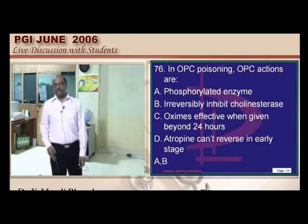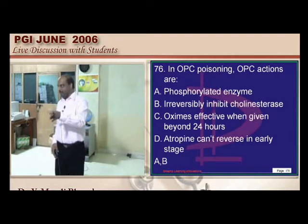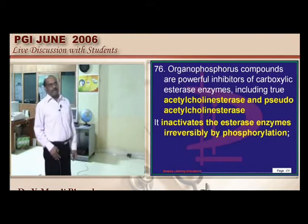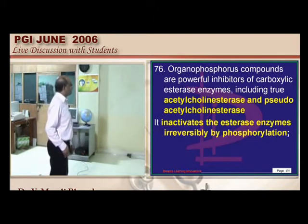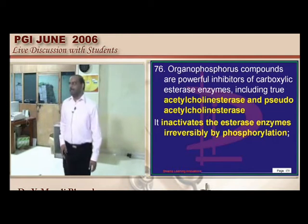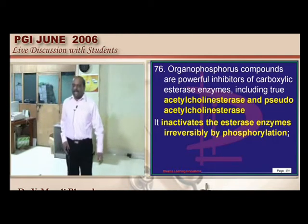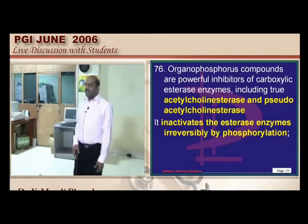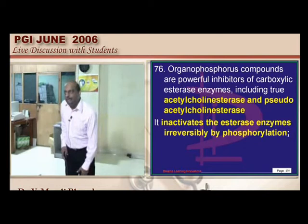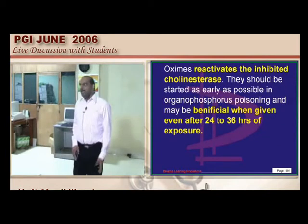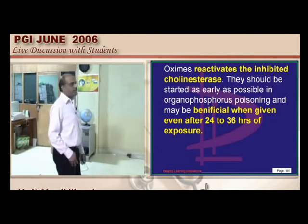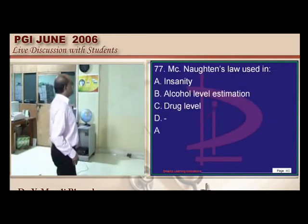Organophosphate poisoning causes irreversible phosphorylation and denaturation of acetylcholinesterase. Pralidoxime (PAM) must be given as early as possible before irreversible damage occurs. Atropine is given not to antagonize nicotinic effects but only to antagonize the muscarinic effects of excess acetylcholine in OP poisoning.